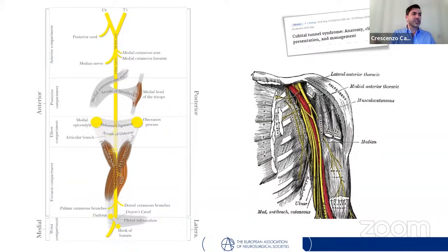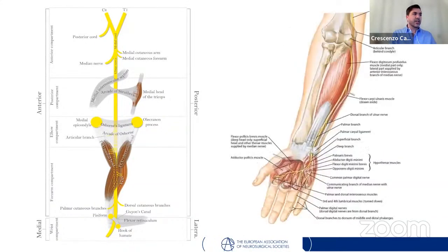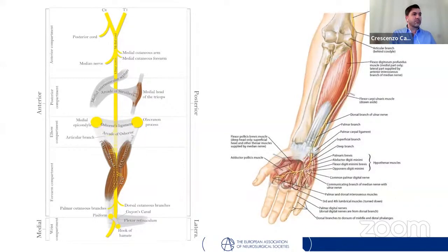At the coracobrachialis insertion, the ulnar nerve pierces the medial intermuscular septum and reaches the posterior muscular compartment. One common compression site here is the arcade of Struthers, which we will see later. Notably, the ulnar nerve gives no motor or sensory branches above the elbow. At the elbow, it enters the cubital tunnel, passing posterior to the medial epicondyle where it can be palpated by hand, then enters the anterior compartment of the forearm between the two heads of the flexor carpi ulnaris.